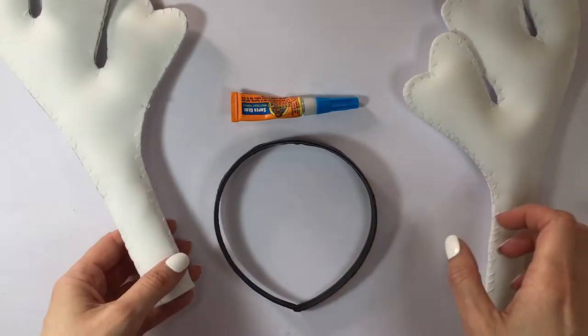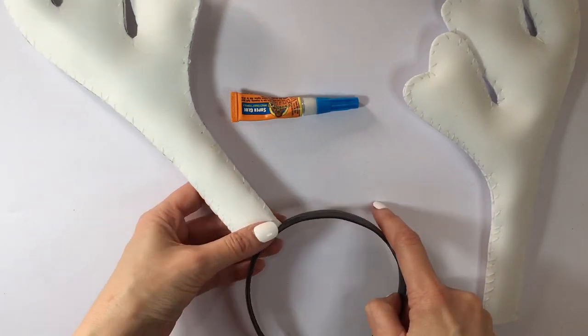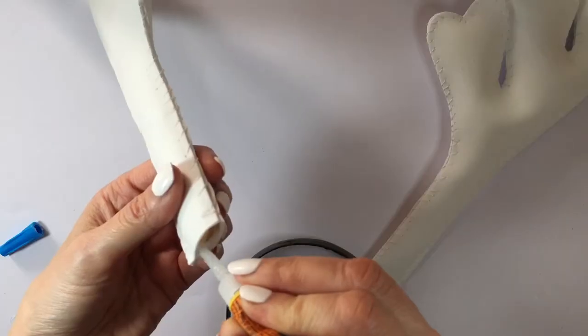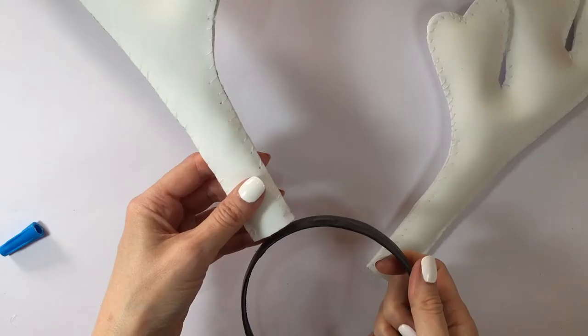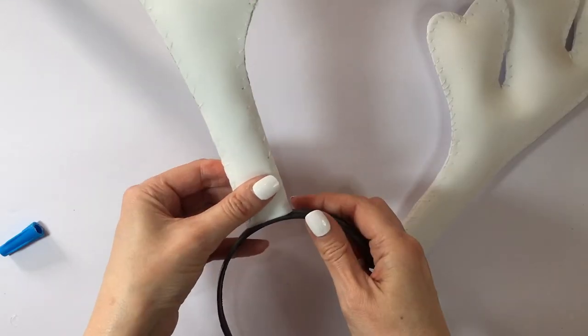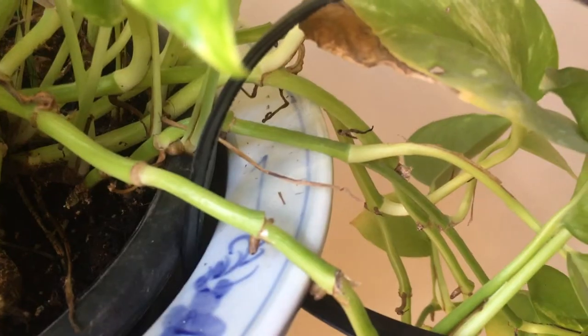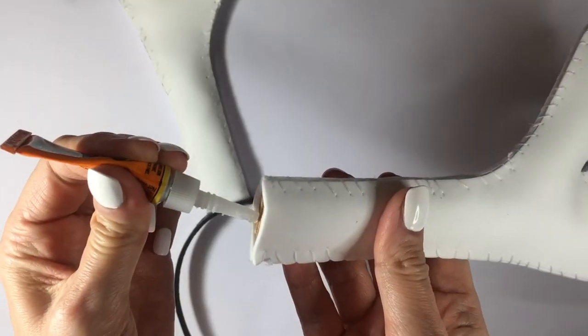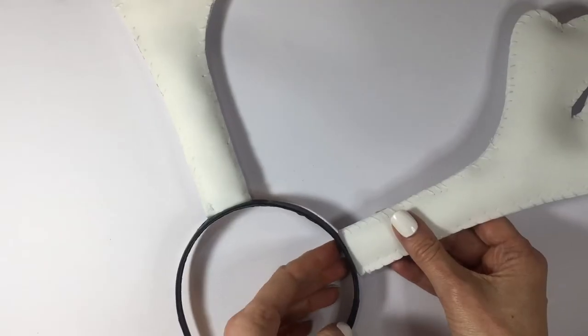Now I'm going to be gluing this to my headband. I really recommend you to use a headband that is on the thicker side, just so it has more stability. I'm going to be using my super glue again, and I'm going to be pretty much gluing this, working with one at a time, and let it rest for overnight. Just making sure that the first one is glued and set and ready to go before you move on to the next one.